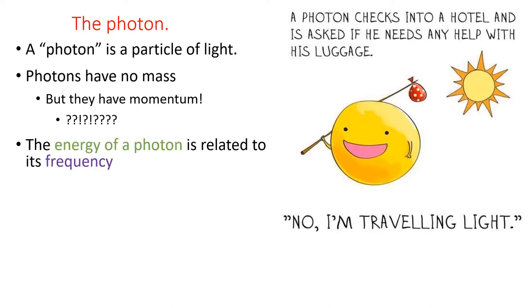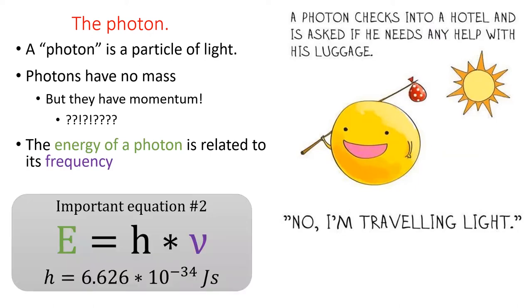The energy of a photon is directly related to its frequency through important equation number two. Specifically, the energy of a photon in joules is equal to the frequency times Planck's constant h.